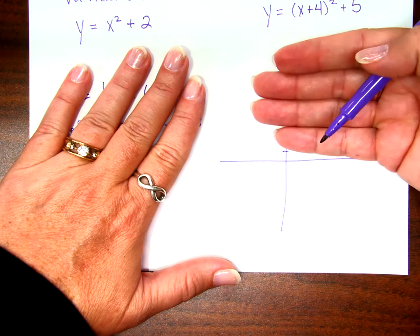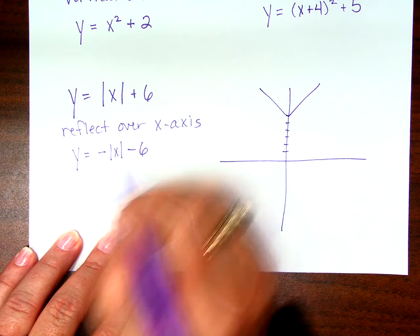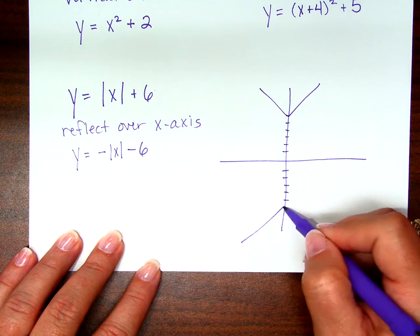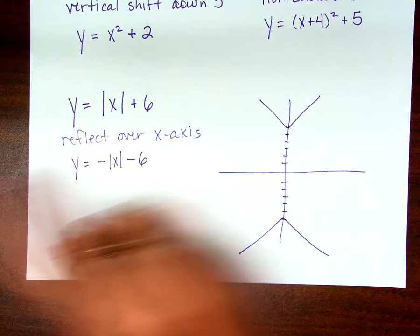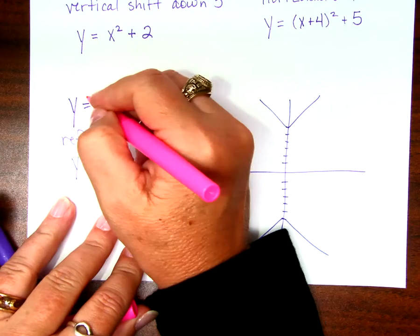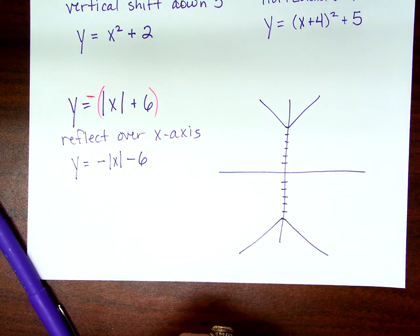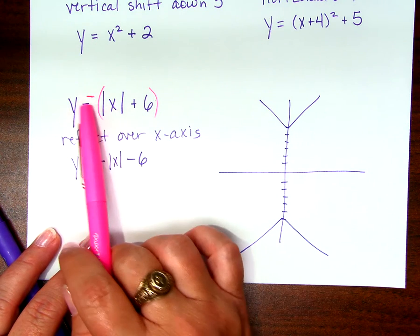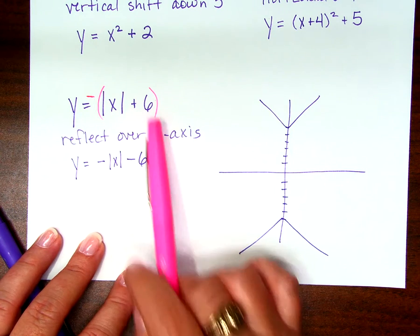If I want to reflect it across the x-axis, it does need to be minus six, doesn't it? Does that make sense? The negative here, let me show you this way. What I did is I put a negative on the whole equation. Is that a better way to think about it? I put a negative on the whole equation. So that is negative because a negative times the absolute value is just a negative absolute value, and a negative times six is negative six.